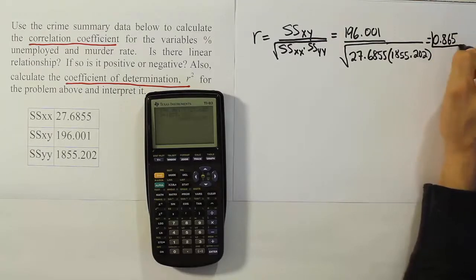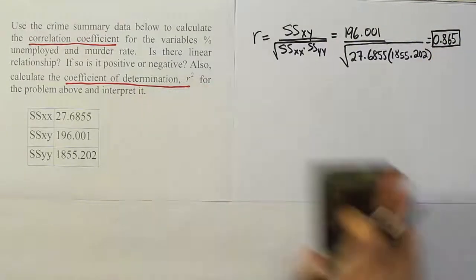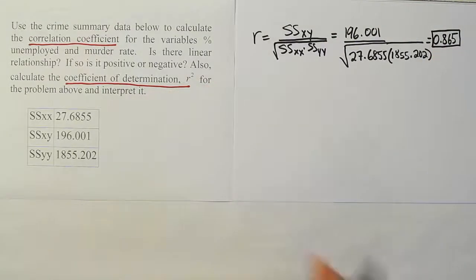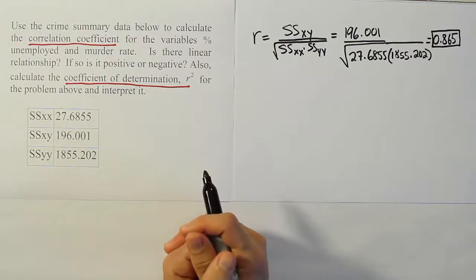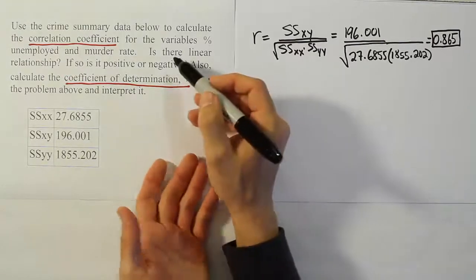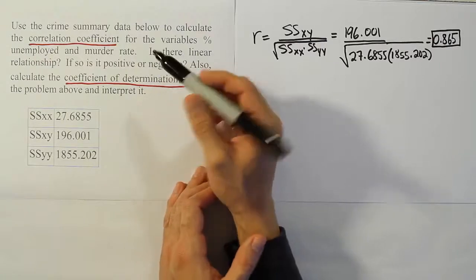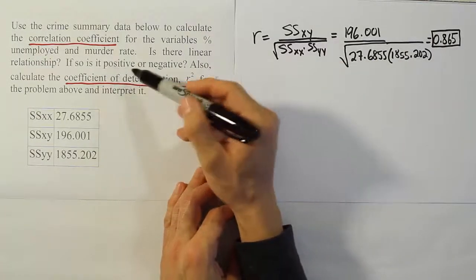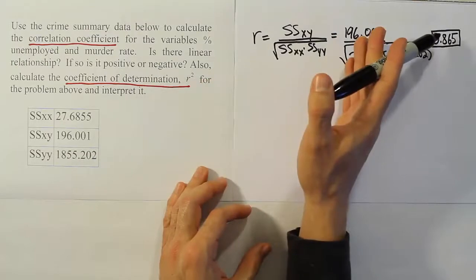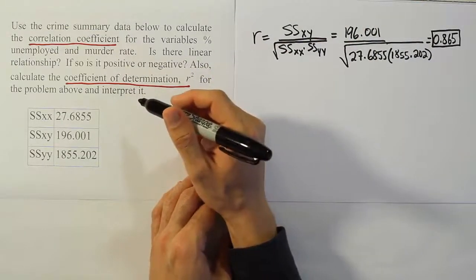So 0.865 is a reasonably strong r value, which indicates there is a reasonably strong positive linear relationship between the variables x and y. The question asks: is there a linear relationship? Yes, this indicates a positive linear relationship. And since r is positive, it is a positive linear relationship.